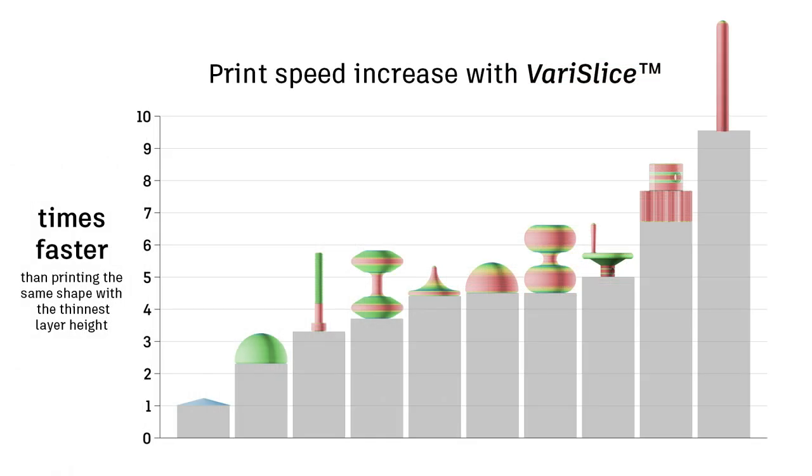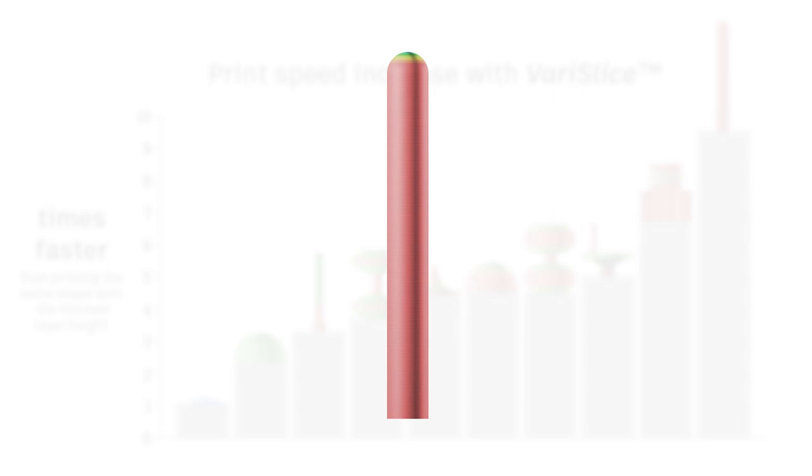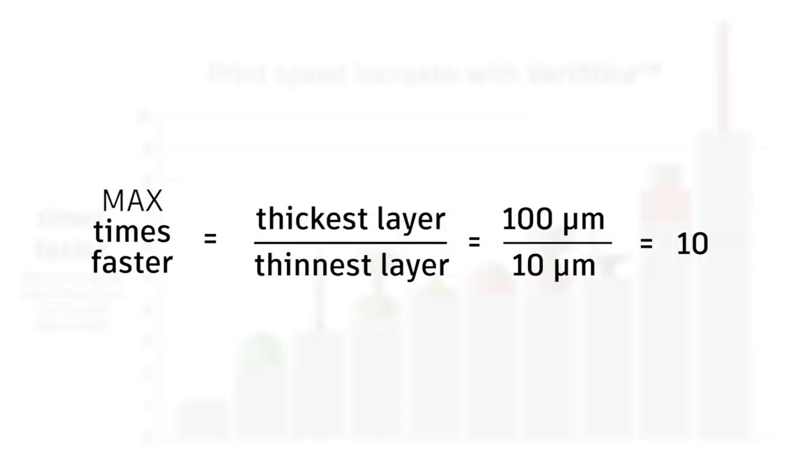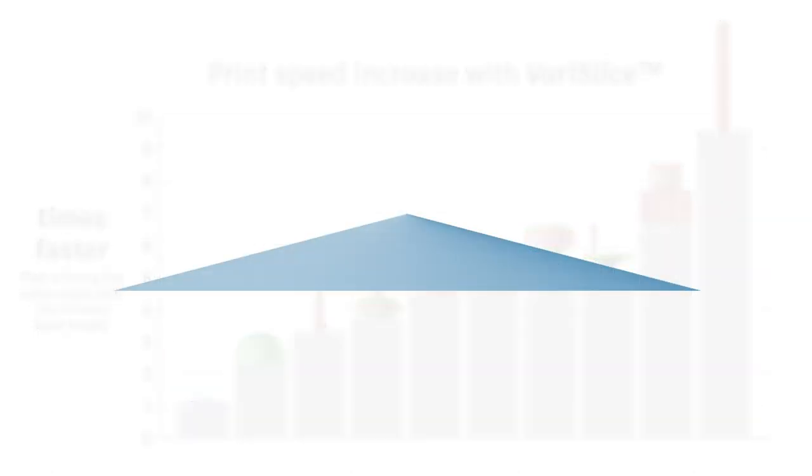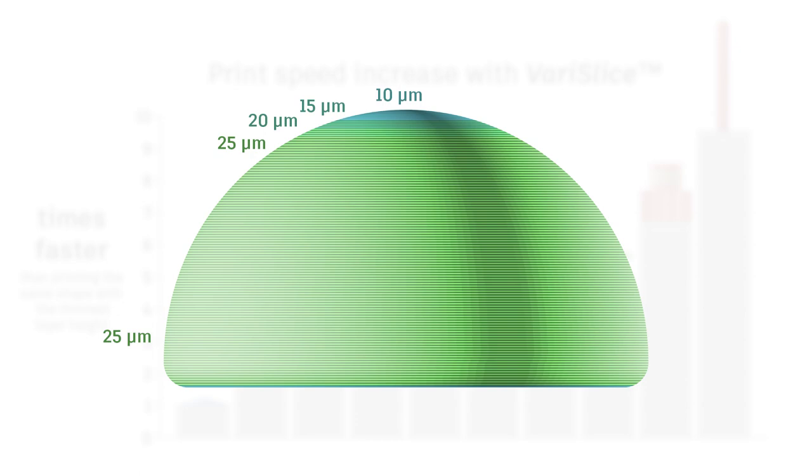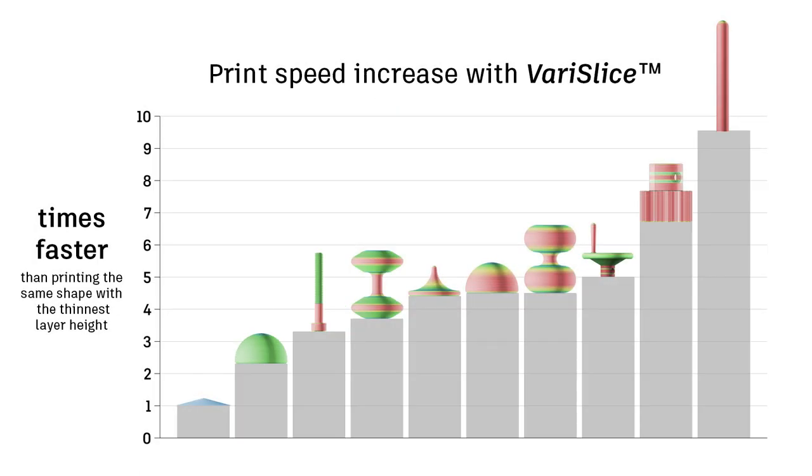So how much time does variable layer slicing save compared to constant layer thicknesses? It completely depends on your geometry. On one extreme, if your object has a long shaft capped with a dome, you'll approach a factor of 10 times the time saved, or the ratio of your thickest layer to your thinnest layer. On the other extreme, a short and wide pyramid would not save you any time at all. Various shapes will be somewhere in between. A dome printed with variable layers ranging from only 25 to 10 microns closely approximates the best that it can do, about two and a half times faster.